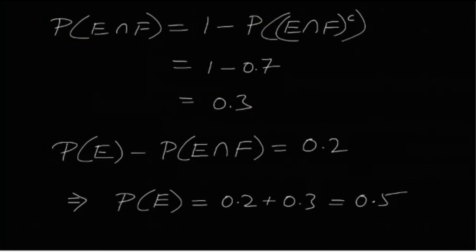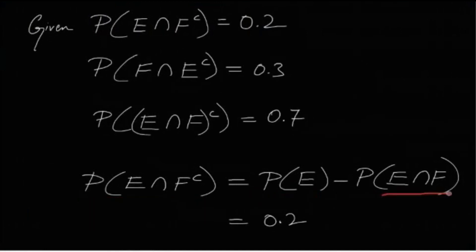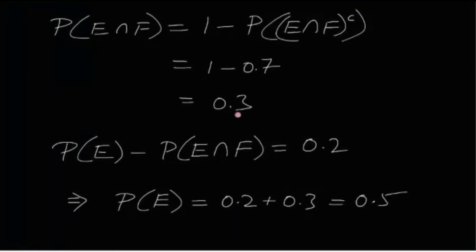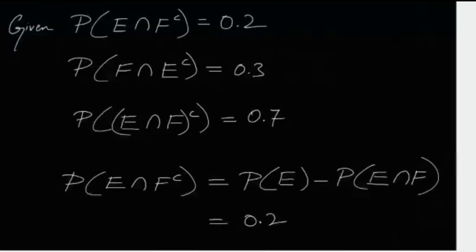Since P(E ∩ F^c) = P(E) − P(E ∩ F) = 0.2 and P(E ∩ F) = 0.3, we get P(E) = 0.2 + 0.3 = 0.5. Option D claims P(E) = 0.6, which is false.